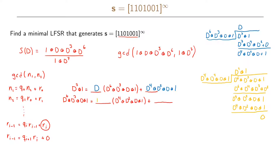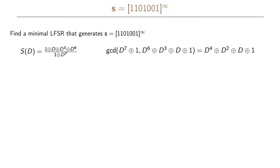The quotient is D^2 + 1 and the remainder is 0. Since we have a 0 remainder, the previous non-zero remainder, D^4 + D^2 + D + 1, is the GCD of our two polynomials. We have now completed the first step of our procedure, which was to find the greatest common divisor between the numerator and the denominator. The next step is to write both polynomials in a shorter, lower-degree form by dividing by the GCD.